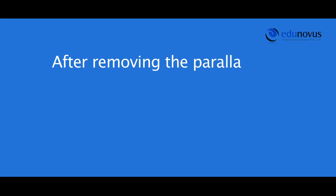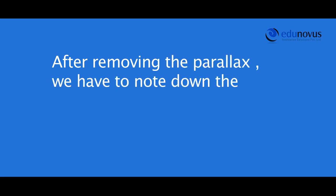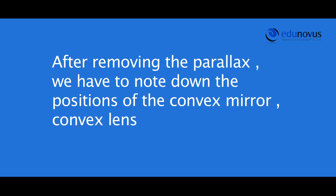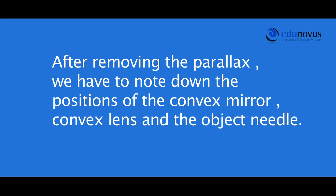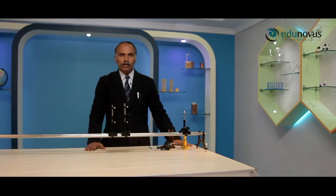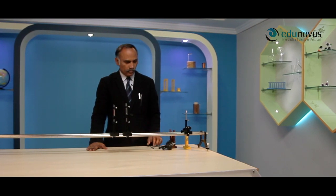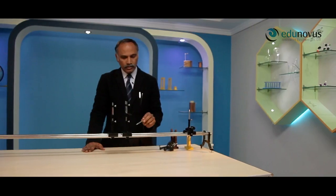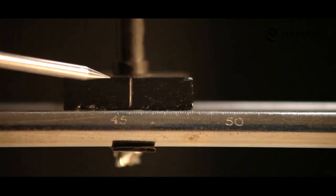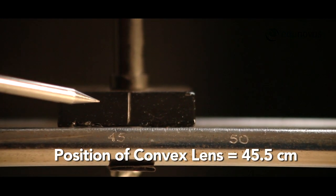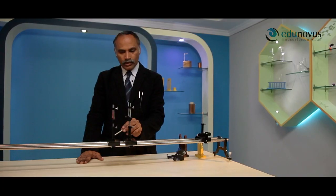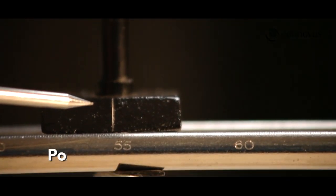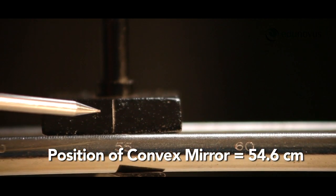After removing the parallax, we note down the positions of the convex mirror, convex lens, and the object needle. The position of the object needle is at 6 centimeters, the position of the convex lens is at 45.5 centimeters, and the position of the convex mirror is at 54.6 centimeters.